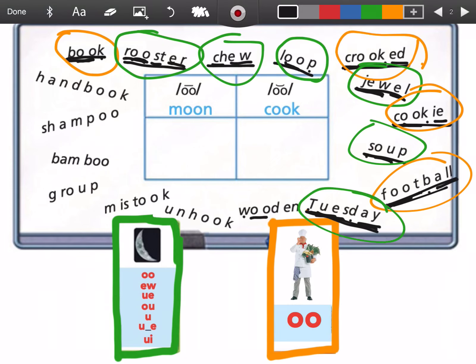W. U. Wood. D. Wood. Eh. N. Wooden. Wooden. U. Un. H. Unhook. Unhook. Uh. Good job.